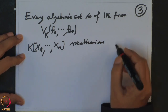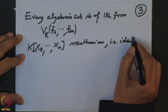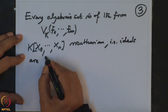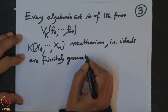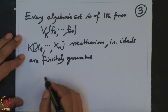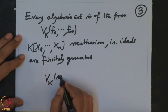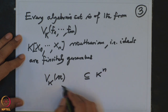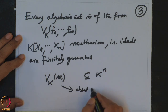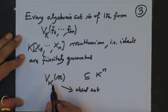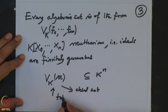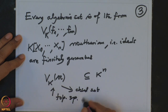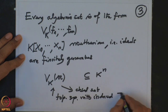Since the polynomial ring is Noetherian, ideals are finitely generated. An algebraic set V = V_K(A) is contained in K^N and is a closed set. It also has more structure: it has a topology coming from the induced Zariski topology, so it is also a topological space.